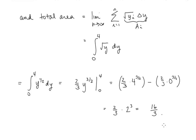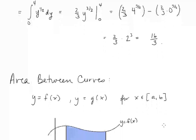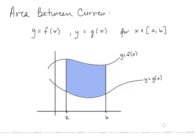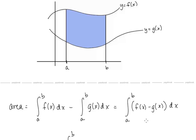So now we have the idea of integrating to find areas not only with respect to x, but also with respect to y. Building on that, let's look at the area between curves. Here we have y equals f of x and y equals g of x, and we want to find the shaded area between the curves over the interval from a to b. We know how to find the area under each curve individually, so what we want to do is subtract those two integrals, which we can write as one integral: the integral from a to b of f of x minus g of x.